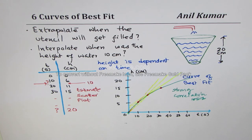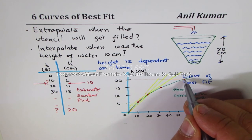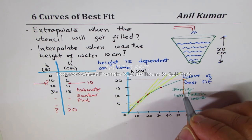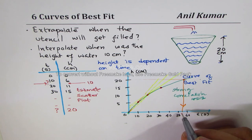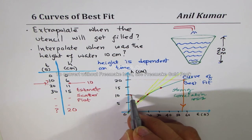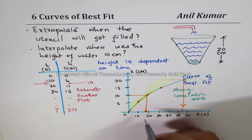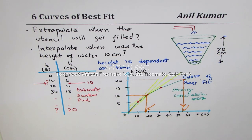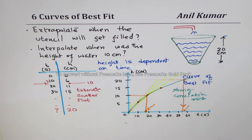Now figure out when the utensil will fill up — somewhere here on the extended curve — and when the height was 10 cm — somewhere here on the curve. Your experiment values may not match mine, but you now have an idea how to perform such an experiment and interpret data using scatter plots. I hope you've learned how useful this can be.